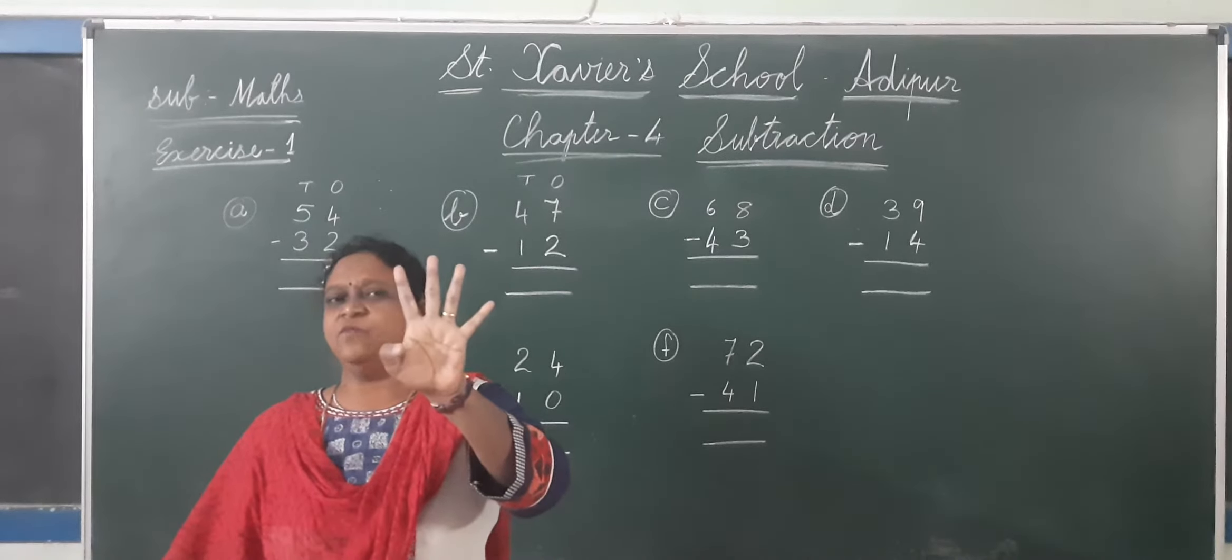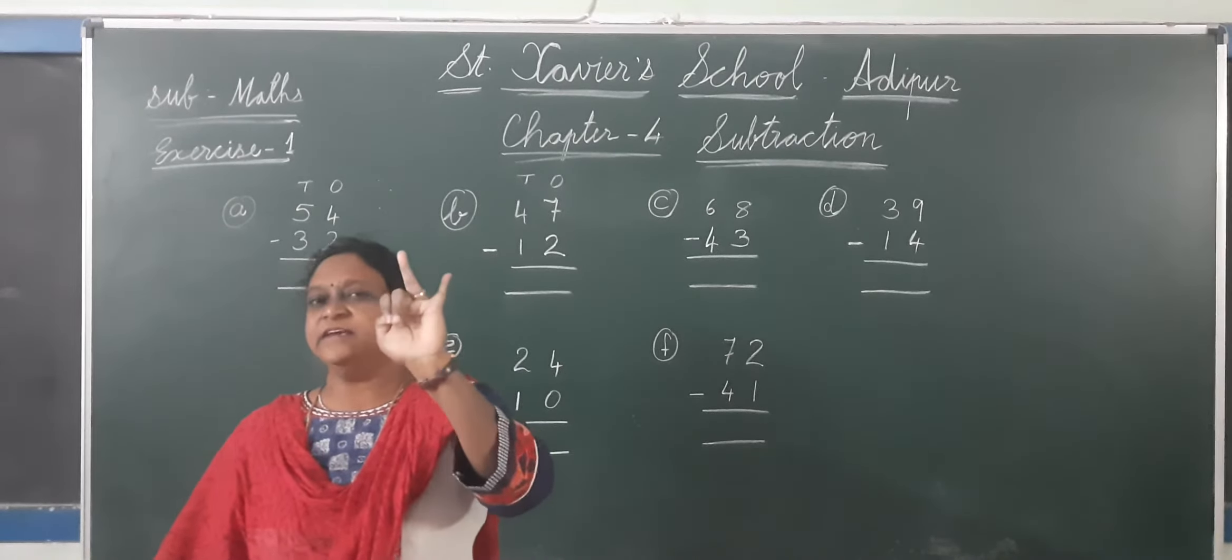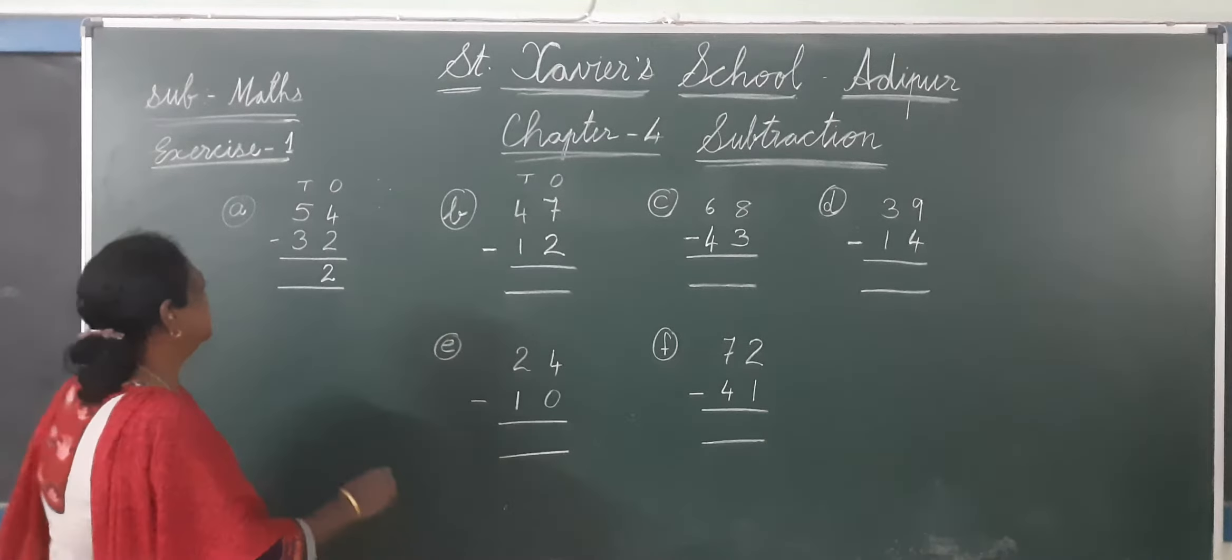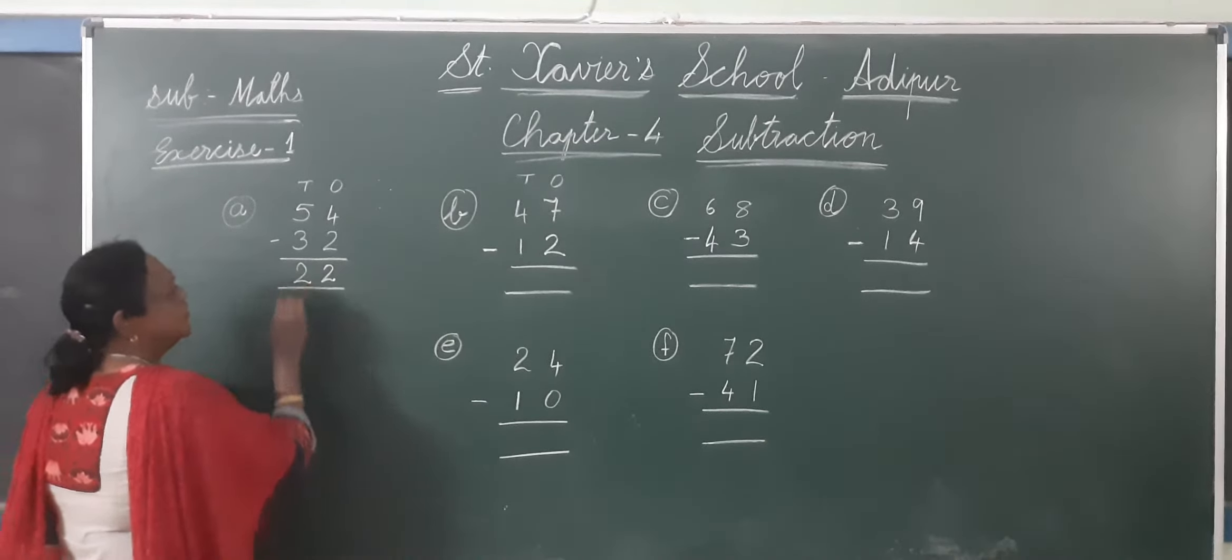So 5 minus 3. 1, 2, 3. Answer is 2. So you will write here, 2. In this way.